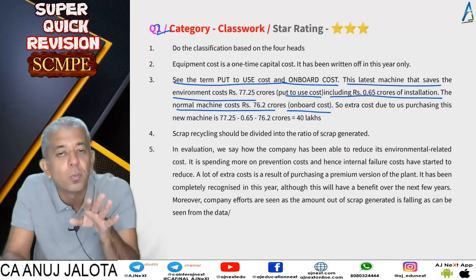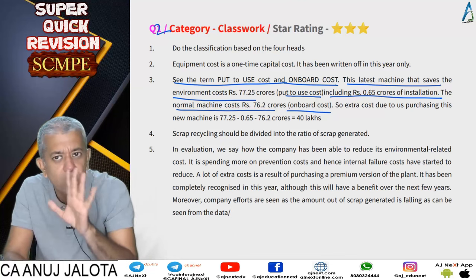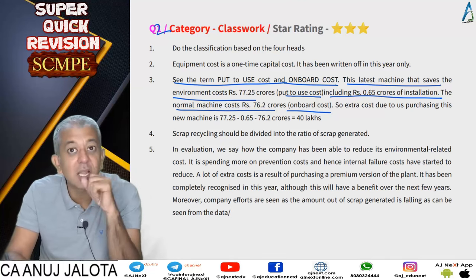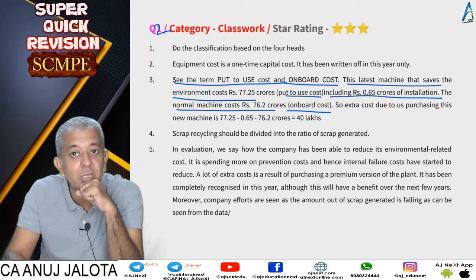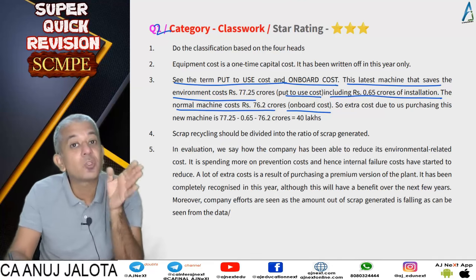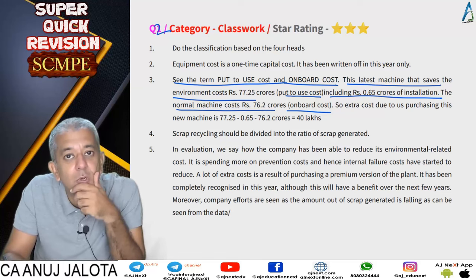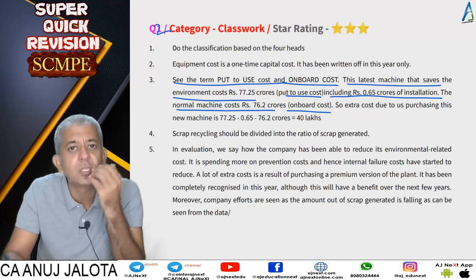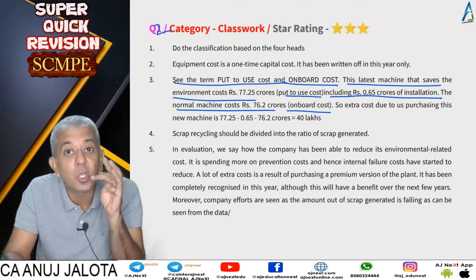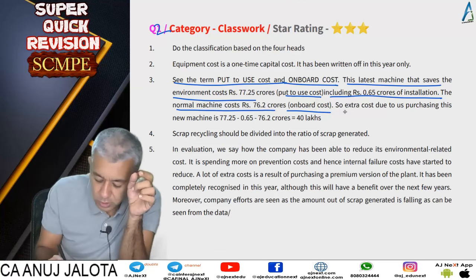The key distinction: 'put to use cost' of 77.25 includes every kind of cost, while 'onboard cost' of 76.20 for the normal machine does not include installation. Since we purchased the premium machine specifically to reduce environmental impact, that should be classified as an environmental prevention cost. The extra cost due to purchasing this particular machine is 77.25 minus 76.20, plus the installation difference.